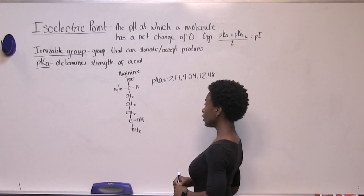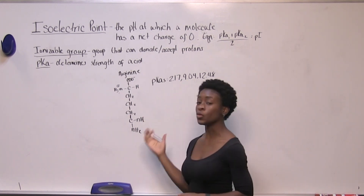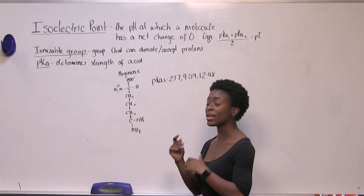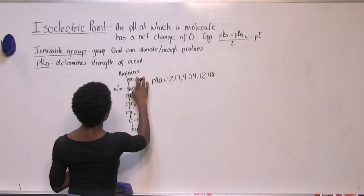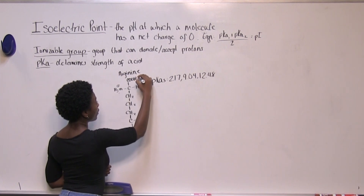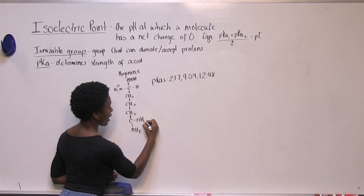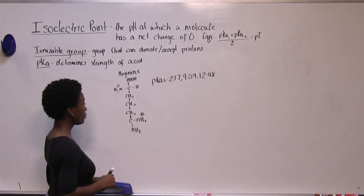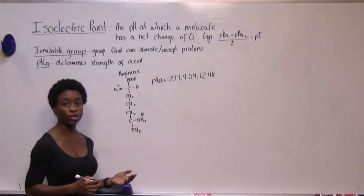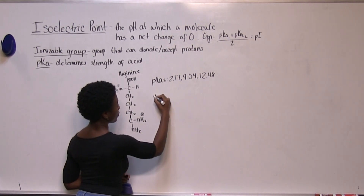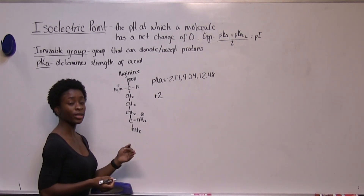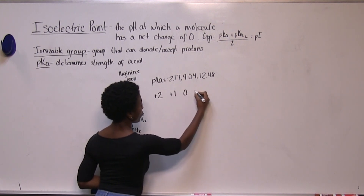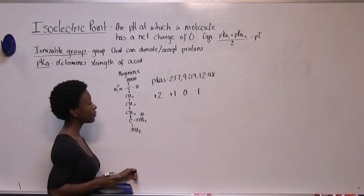Here we have arginine in its neutral form. If we drop it in extremely acidic conditions it's going to be completely protonated. We add a hydrogen there and a hydrogen here, gaining a plus charge. So now our molecule has an overall charge of plus two. We're going to write all the charges we'll see past zero: plus two, plus one, zero, negative one.